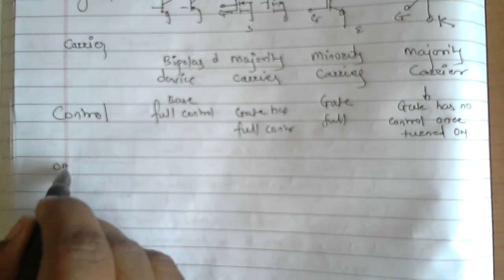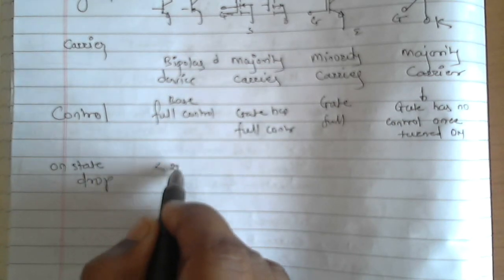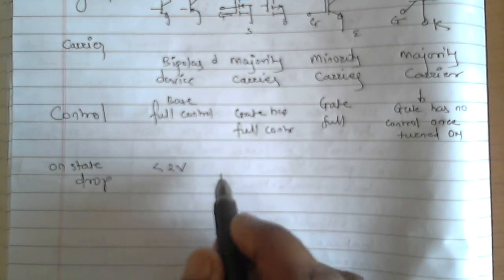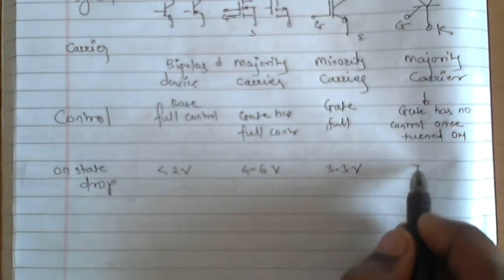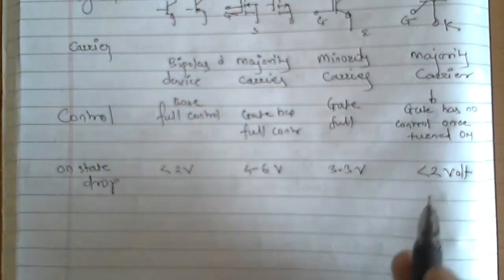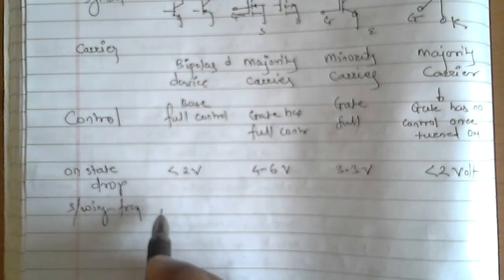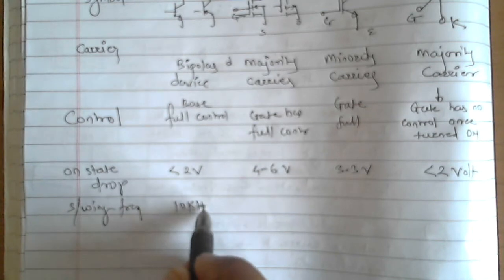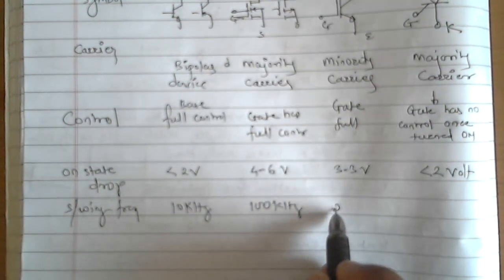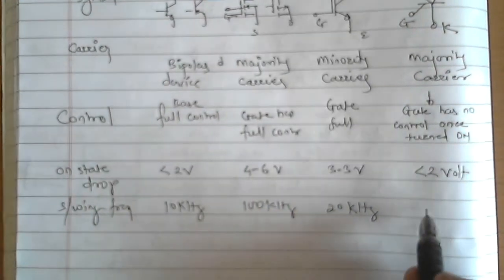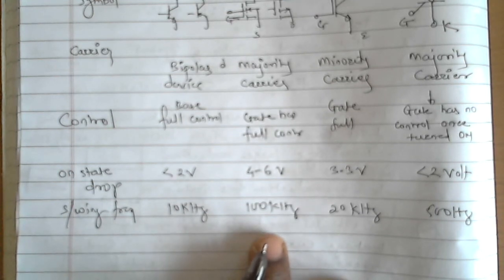On-state voltage drop: BJT is less than 2 volts, MOSFET is 4 to 6 volts, IGBT is around 3.3 volts, and SCR is less than 2 volts. Switching frequency: BJT is 10 kHz, MOSFET is highest at up to 100 kHz, IGBT is somewhat lower at 20 kHz, and SCR is around 500 Hz. So MOSFET has the highest switching frequency.